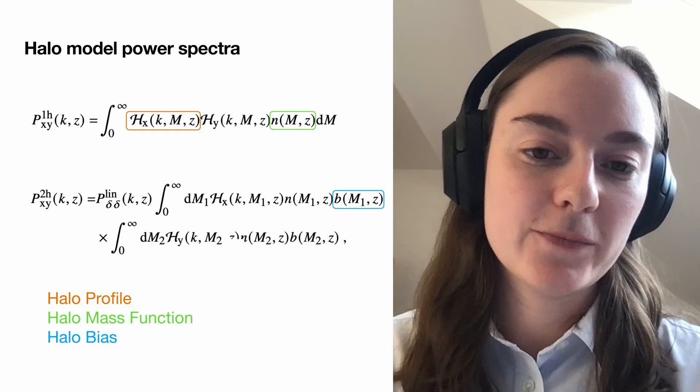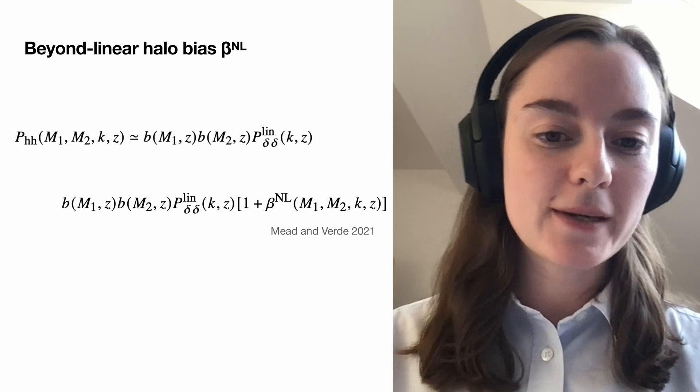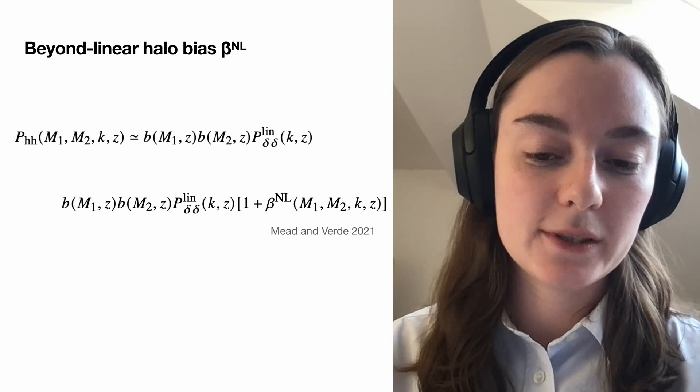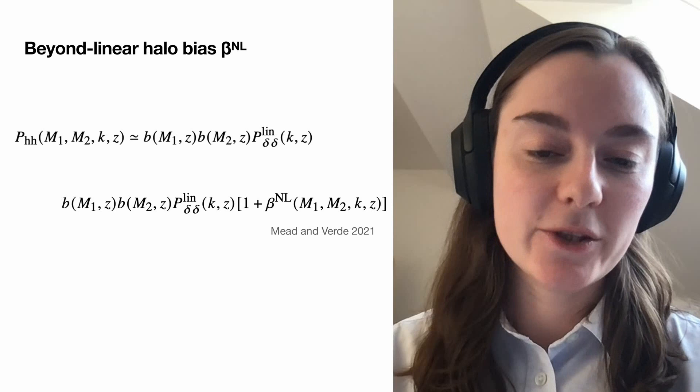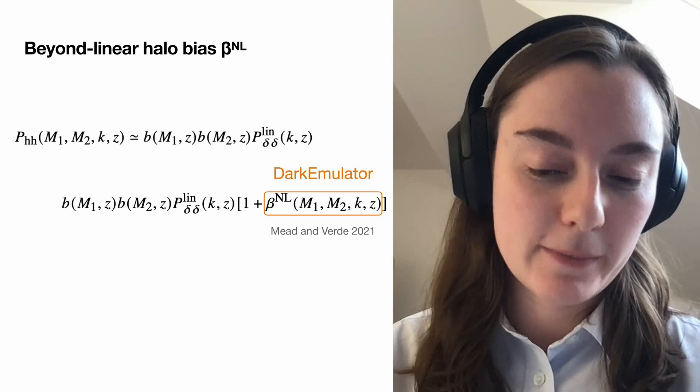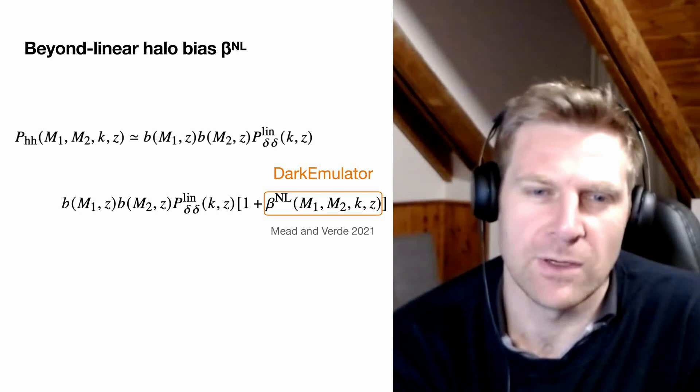Here you can see the halo-halo power spectrum related to the linear matter power spectrum. The top equation shows linear halo bias — that's the standard assumption. What Mead and Verde did in 2021 is essentially add in this extra beta_NL factor, which adds the beyond-linear halo bias aspect. That is something calibrated from simulations — from dark matter simulations, you take the linear bias and the linear matter power and rearrange the equation to get your correction.